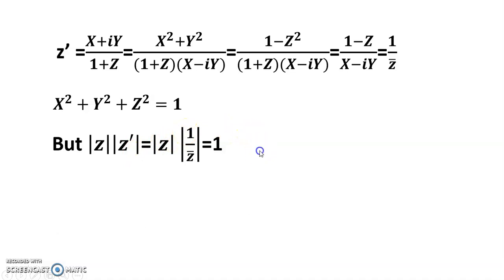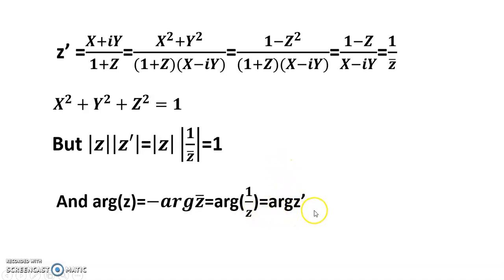Since |z'| = 1/|z| and arg(z') = arg(1/z̄), z and z' are inverse points with respect to the unit circle. Therefore, points of the Argand plane which are inverse points with respect to the circle |z| = 1 correspond to points of the Riemann sphere symmetrical with respect to the plane Z = 0. When z = 0, X = 0, Y = 0, Z = −1, and z' is the point at infinity, which corresponds to (0, 0, 1).